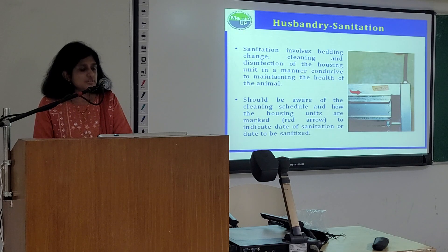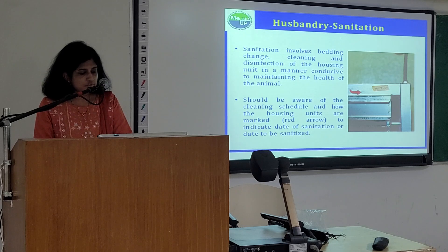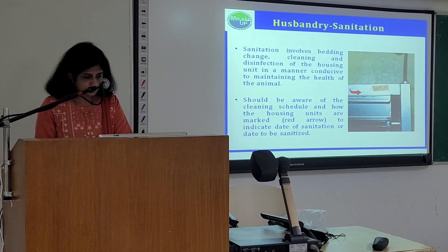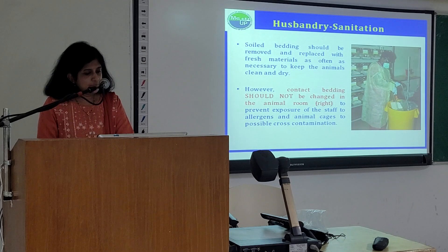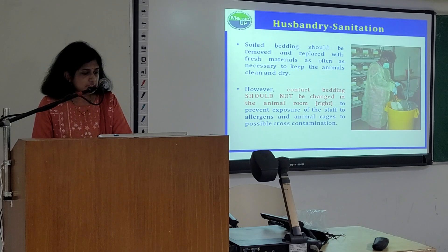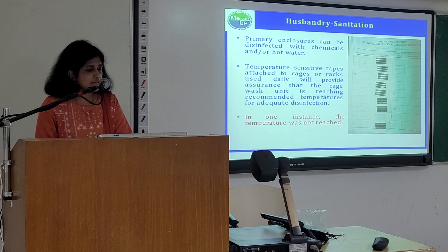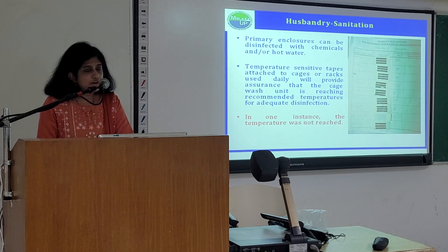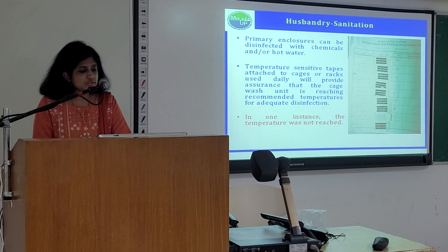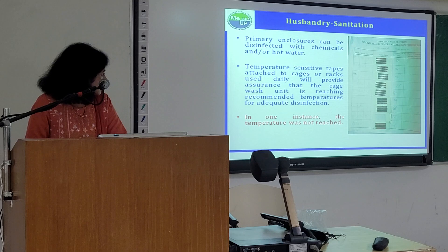Sanitation involves bedding, cleaning and disinfection of the housing unit in a manner conducive to maintaining the health of the animal. One should be aware of the cleaning schedule and how the housing units are marked — for example, a red arrow to indicate the date of sanitation or the date to be sanitized. Soiled bedding should be removed and replaced with fresh materials as often as necessary to keep the animals clean and dry. However, contact bedding should not be changed in the animal room to prevent exposure of staff to allergens and exposure of animal cages to possible cross-contamination. Family enclosures can be disinfected with chemicals and/or hot water. Temperature-sensitive tapes attached to cages or racks will provide assurance that the cage-wash unit is reaching recommended temperatures for adequate disinfection.